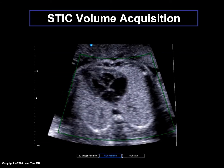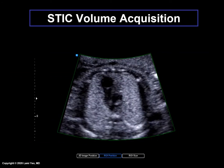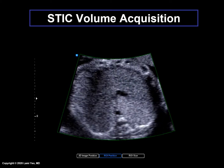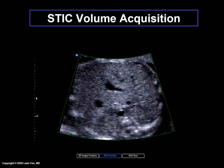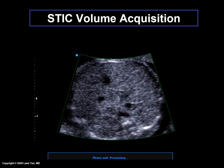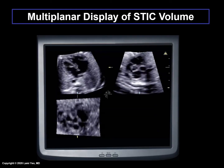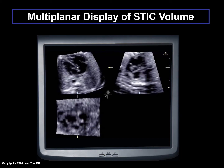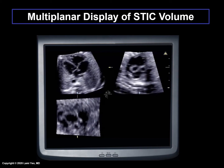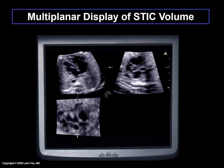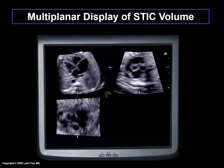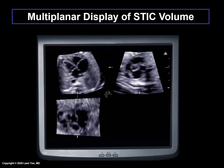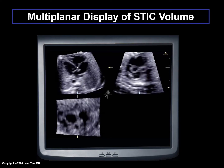When the fetal heart is imaged with STIC, frames are acquired in sequence and assembled into a four-dimensional volume data set. Cardiac structures are then visualized as a cine-loop of a complete single cardiac cycle in motion. STIC volumes are typically shown as a multi-planar display, as shown here. This format allows correlation between image planes that are perpendicular to the main acquisition plane, shown in the upper left corner — hence the term multi-planar. Multiple planes with a fetal heart in motion can be visualized and examined at the same time.